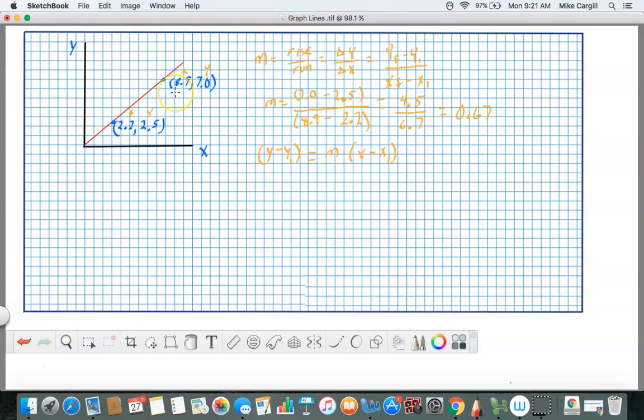So let's go ahead and substitute in our numbers, our values. We have y minus y1 which is 2.5, equals, now this is our slope, remember we know our slope it's 0.67, so we're going to put it in. And then we're going to substitute in our value for x1. We're going to use 2.2.